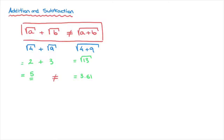Consequently, the square root of four plus the square root of nine is not equal to the square root of four plus nine. And in general, the square root of a plus the square root of b is not equal to the square root of a plus b. Not knowing this formula often leads to mistakes in exam-type questions, so make sure to make a note of this now.